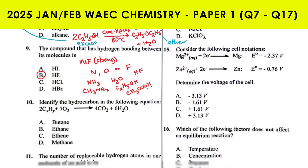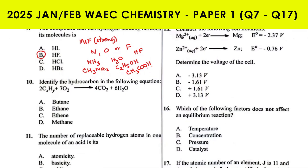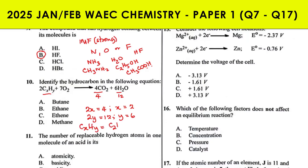Question 10 asks to identify the hydrocarbon in the following equation. A hydrocarbon is a compound made of carbon and hydrogen atoms only. Counting atoms on the right-hand side: 4 carbon atoms and 12 hydrogen atoms. So 2x = 4, giving x = 2, and 2y = 12, giving y = 6. Therefore the formula of the compound is C₂H₆, which is ethane.